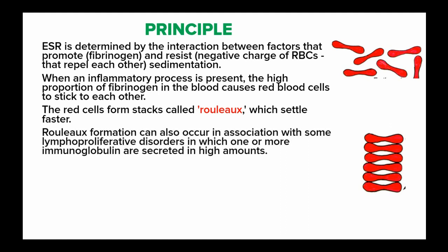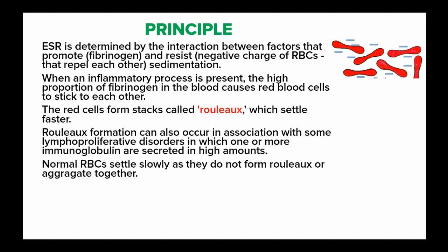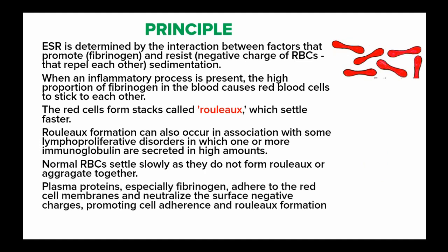Rouleaux formation can also occur in association with some lymphoproliferative disorders in which one or more immunoglobulins are secreted in high amounts into blood. Normally, the red blood cells settle slowly because they do not form rouleaux or aggregate together. In plasma proteins, especially fibrinogen, when it adheres to the red cell membranes, it neutralizes the surface negative charges, and this neutralization promotes cell adherence and rouleaux formation.